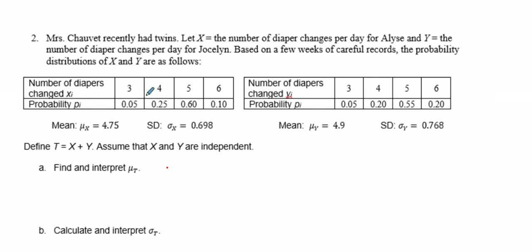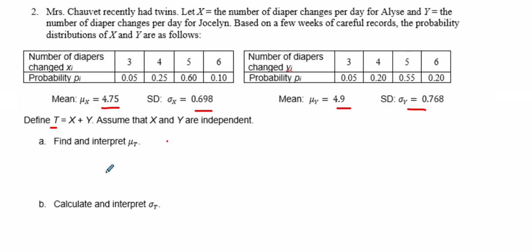The number of diapers changed are 3, 4, 5, 6 with probabilities 0.05, 0.25, 0.60, 0.10, and we have a mean of 4.75 and 4.9, and a standard deviation for each one. Now assume T is the total number of diaper changes for both twins. Let's find the mean of T. The mean of T is simply the mean of X plus the mean of Y, so that equals 4.75 plus 4.9, so the total number of diaper changes is around 9.65.